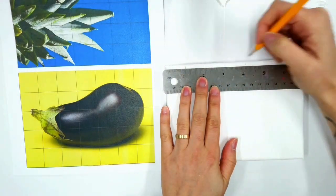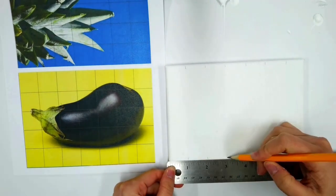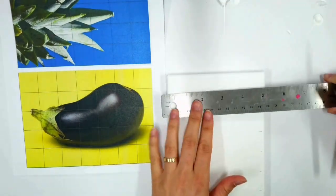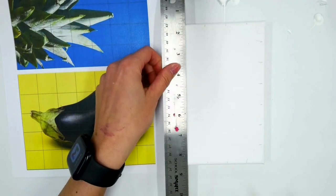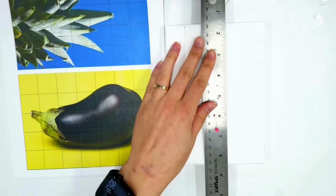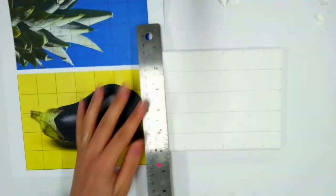Here I'm using the first application, drawing my grid from the eggplant. I'm making those one-inch marks and then connecting them by lining up the ruler and making sure they're perfectly straight.